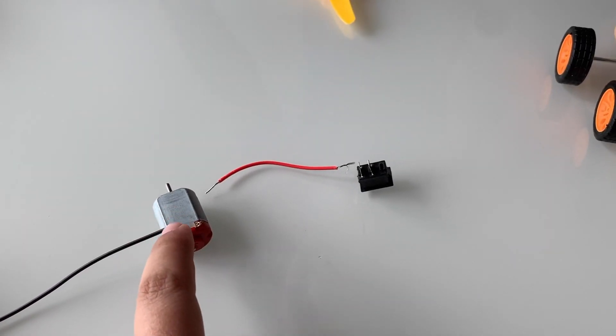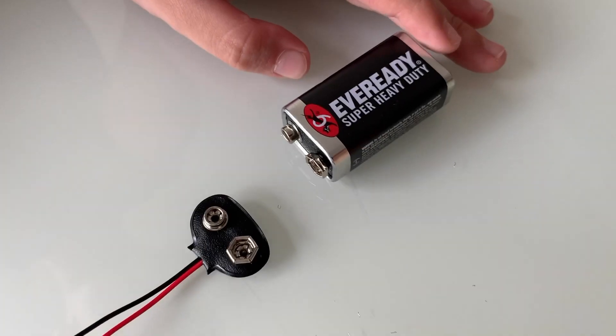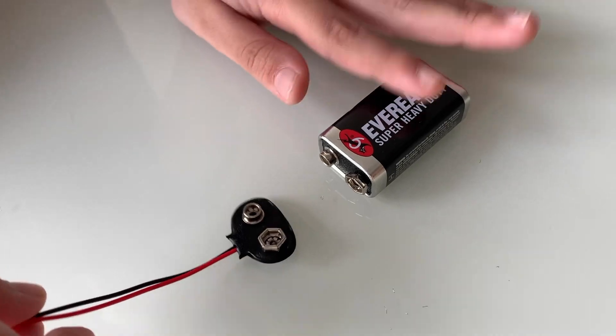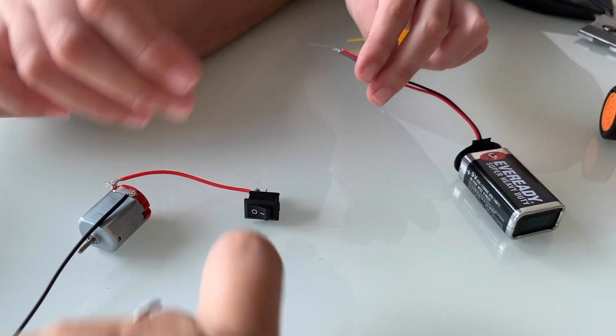First we are going to connect motor and the switch with this red wire. Now we are going to connect the battery and the connectors. The positive of the battery with the switch here.